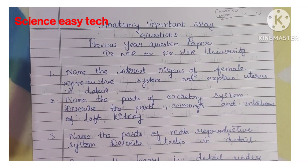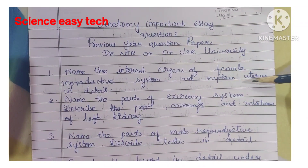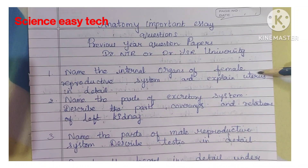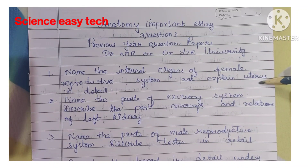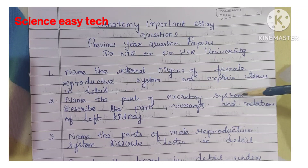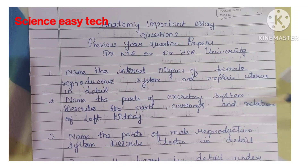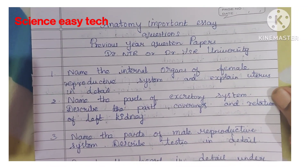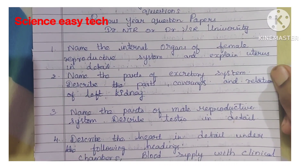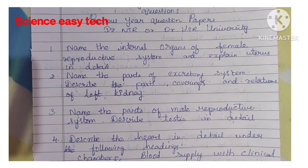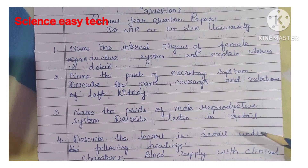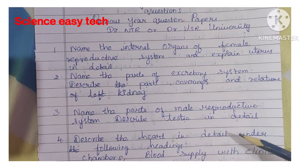The important essay questions are: First question, name the internal organs of female reproductive system and explain uterus in detail. Second question, name the parts of excretory system, describe the parts, coverings and relations of left kidney.